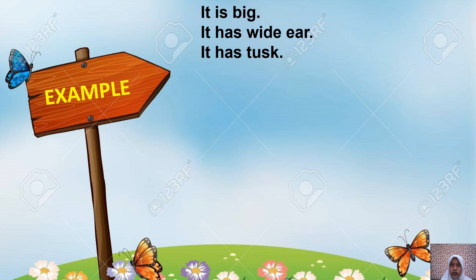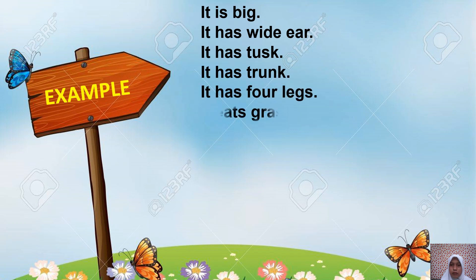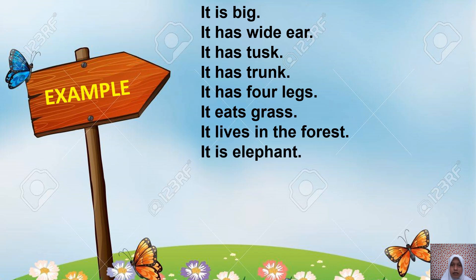Here I have an example of a reading text, and after that you have to answer the questions based on the text. For example: it is big, it has wide ears, it has tusks, it has a trunk, it has four legs, it grazes, it lives in the forest — it is an elephant. Dari ciri-ciri berikut, berarti hewan tersebut adalah elephant.